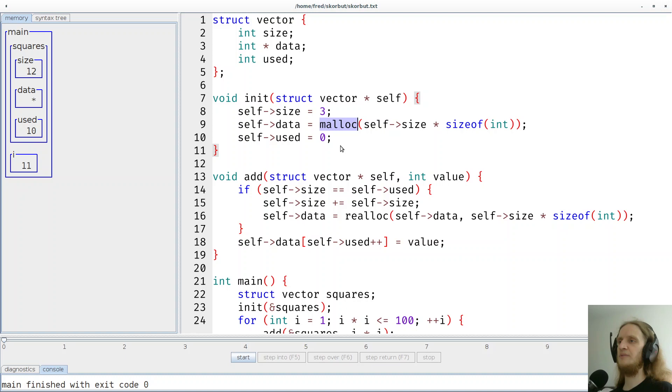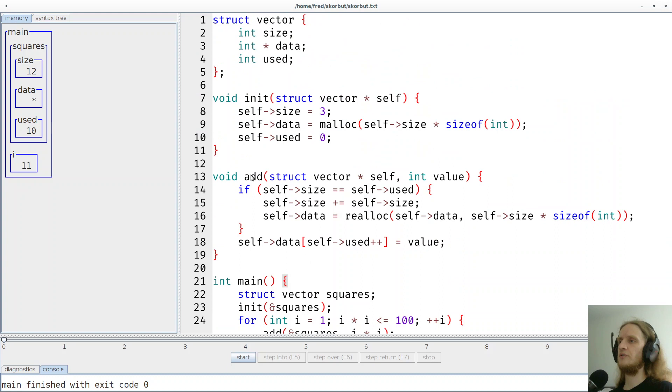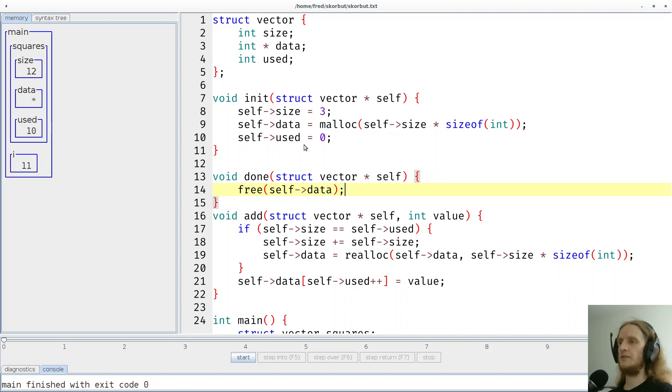So let's also encapsulate the call to free in its own function. So maybe let's say let's write a destructor, if you will, for squares or for vectors in general. So let's write it here. So let's call it done. Struct vector self. And then it frees. So I have still in the clipboard. The data indirectly through the this pointer. The self pointer. Right? That works as well.